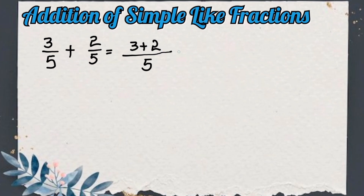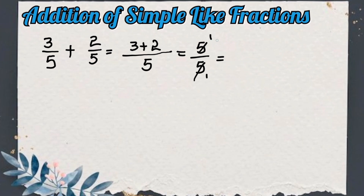After adding them we will get 5 in the numerator, and we also have 5 in the denominator, so this became 5 by 5. After dividing 5 by 5, we will get 1 as the answer. After cancelling this fraction we got 1 as the answer.